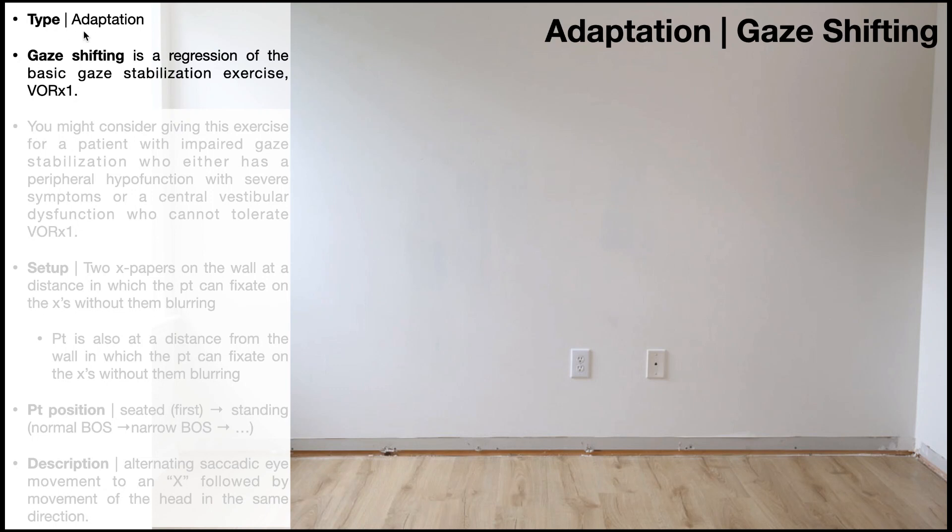And so what you do is you give them gaze shifting, which is a regression of the VOR times one. A couple of examples where you might consider giving gaze shifting as an exercise: number one, somebody who has a peripheral hypofunction but with severe symptoms. Patients with peripheral hypofunction almost always have impaired gaze stabilization. But if their symptoms are so severe that it precludes performing the VOR times one, then gaze shifting is certainly something you could try to promote gaze stabilization.